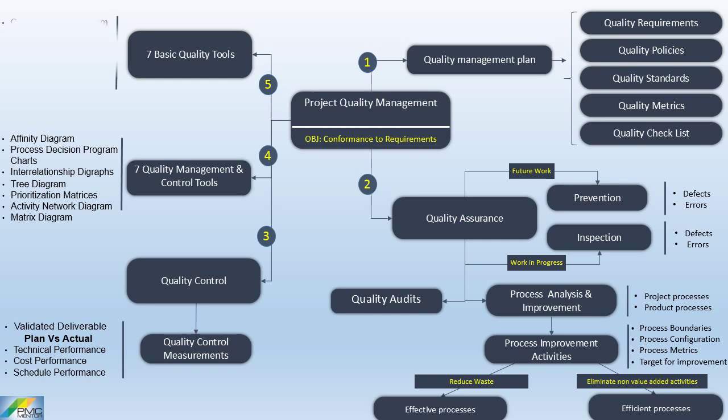The fifth key concept is the seven basic quality tools, also known as the seven QC tools, used to solve quality-related problems. The first tool is the cause and effect diagram, which is a decomposition technique to trace an undesirable effect back to its root cause.